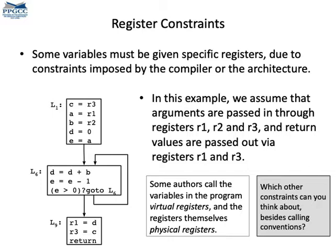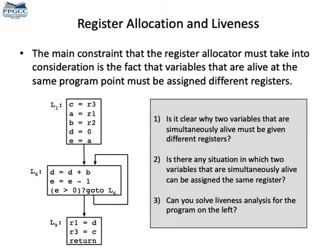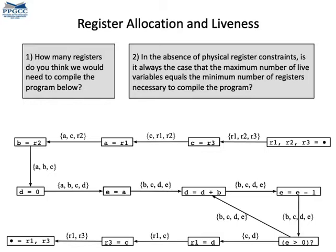The main constraint that defines the register allocation problem is the observation that variables that are simultaneously alive must be in different registers. If that does not happen, then assignments to a variable might update another variable. For instance, here's a representation of live ranges for the previous program. Notice that we have four variables simultaneously alive — that's the minimum number of registers needed to allocate this program.